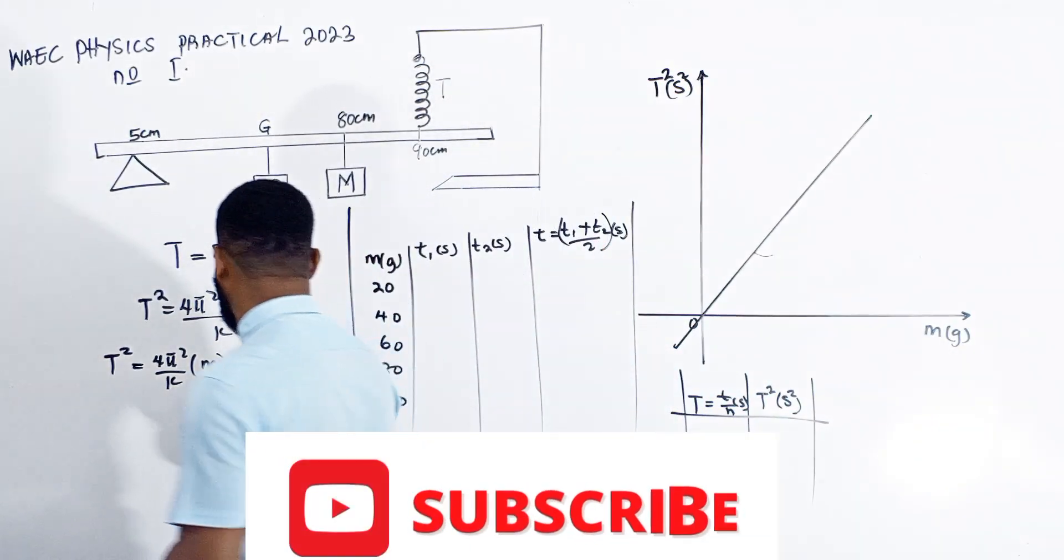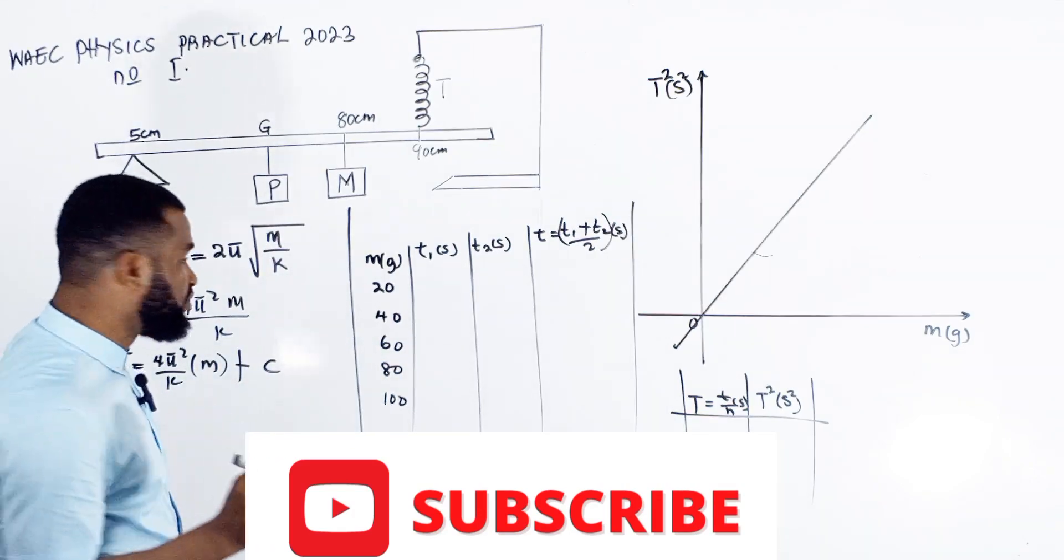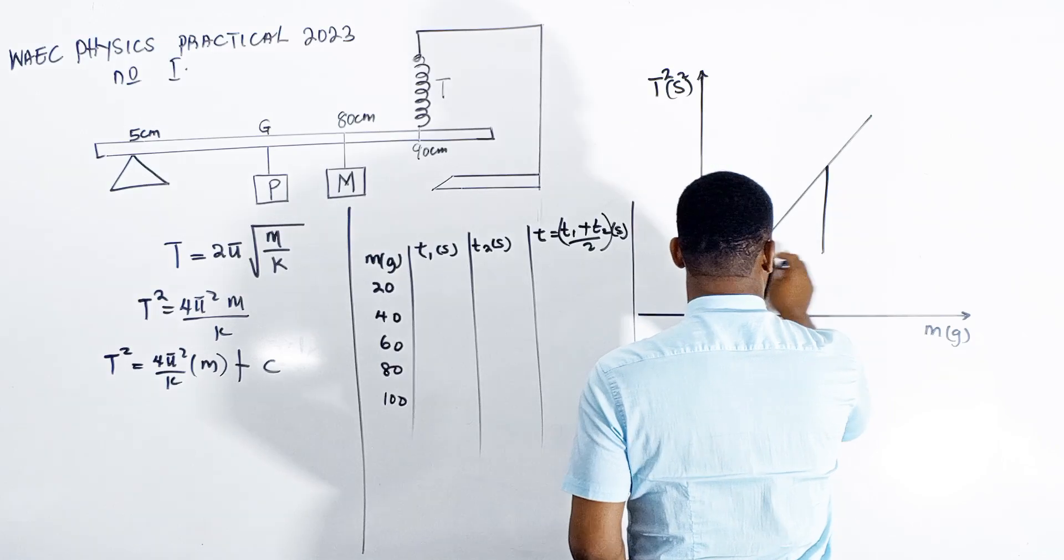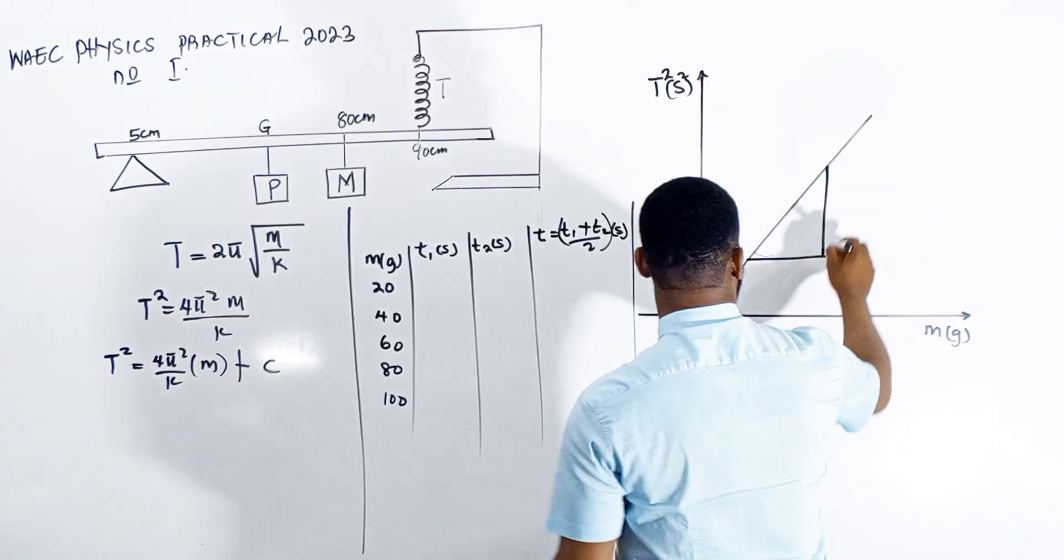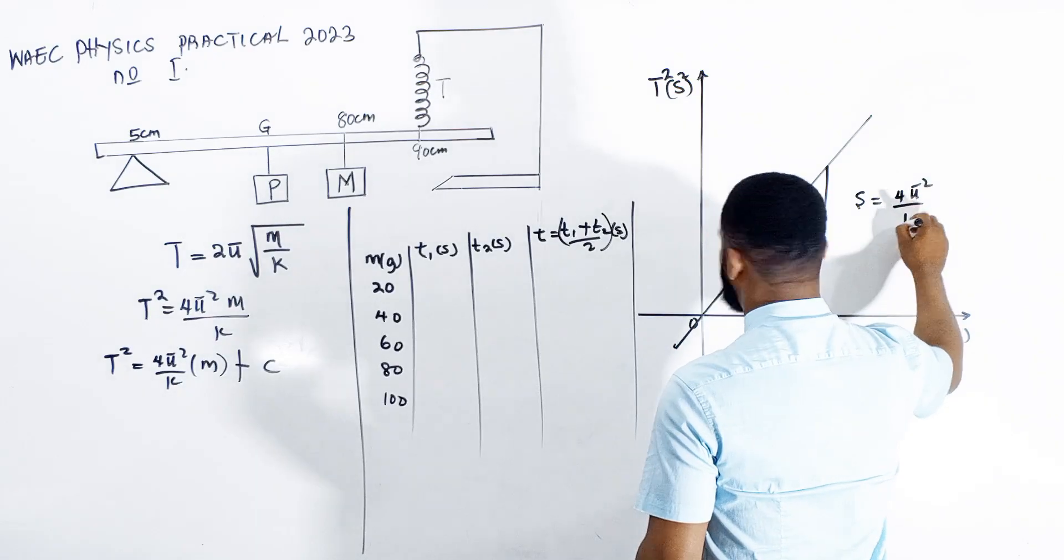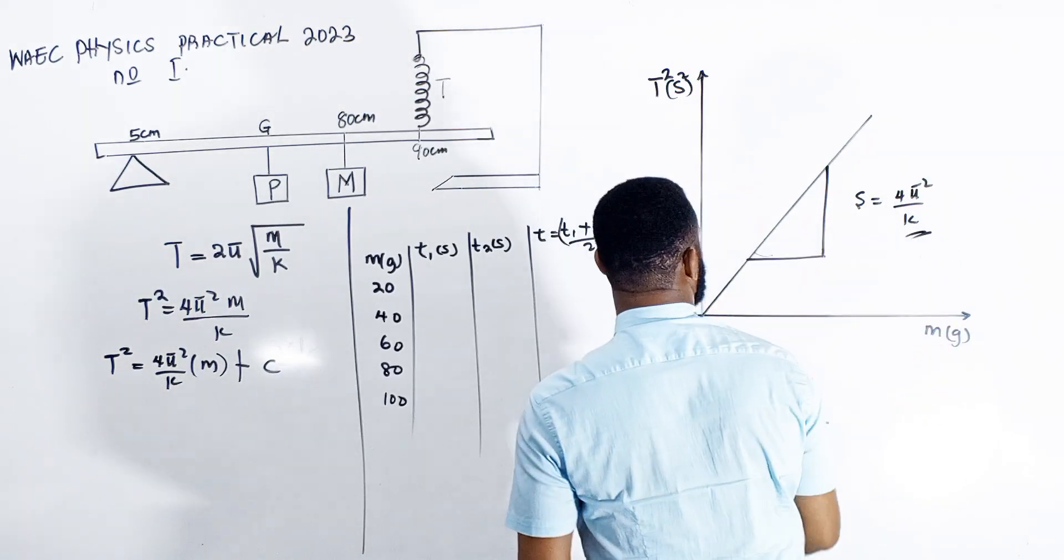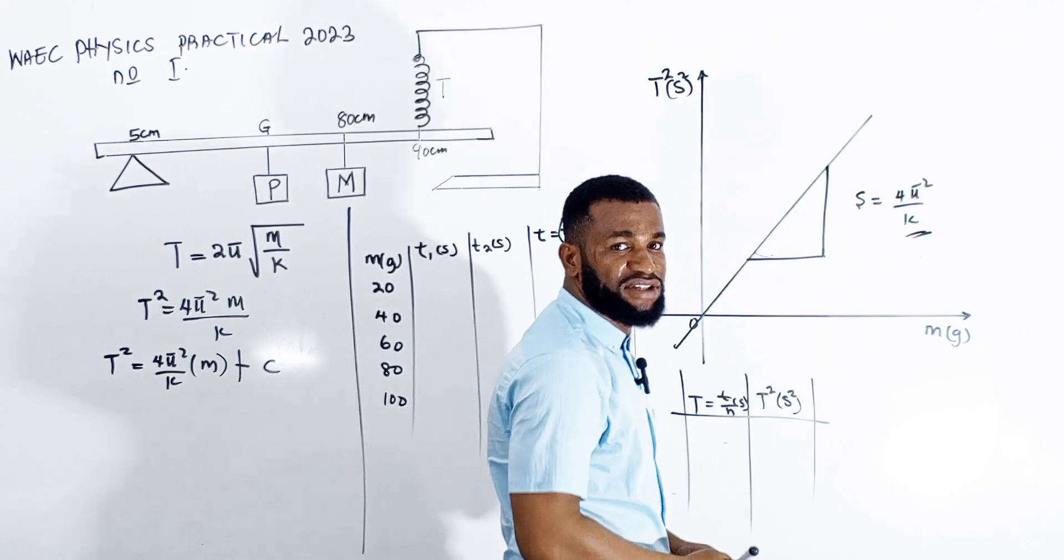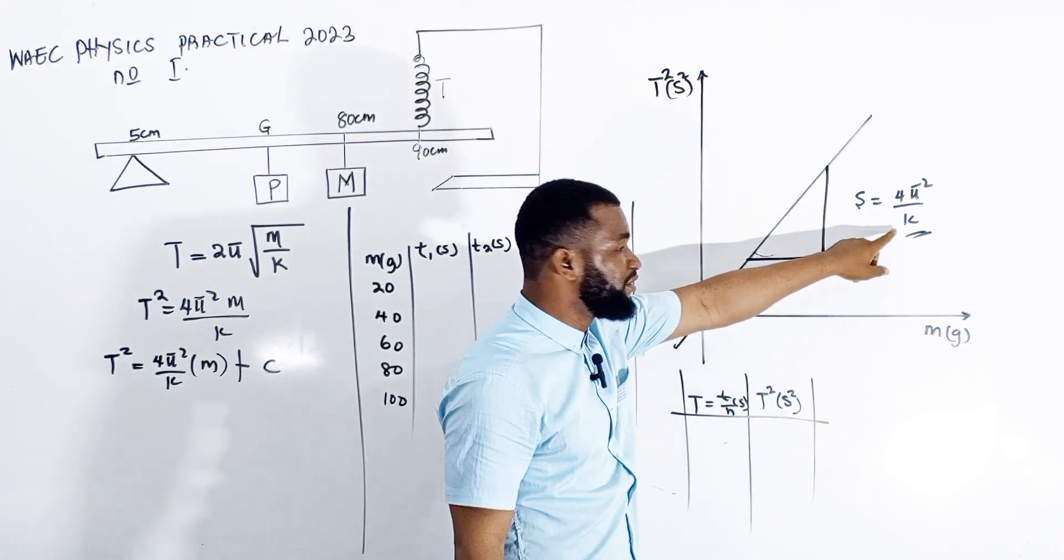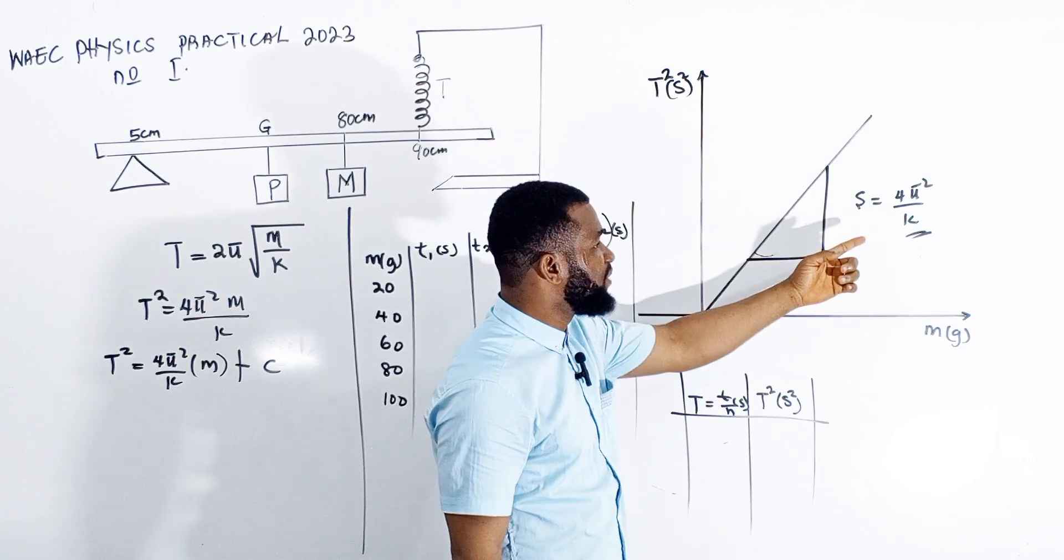But it could pass through the origin because the intercept C is zero. What will be the value of your slope? The slope S = 4π²/K. You don't know K yet, but from the experiment you must find the force constant K.